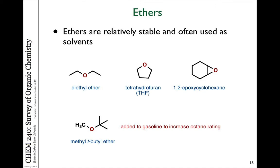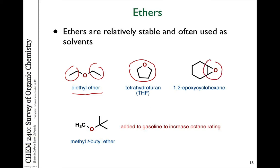Ethers are molecules which have an oxygen attached to two different carbons. Here you can see a quite simple ether, what we refer to as diethyl ether. This is a cyclic version, what we refer to as THF or tetrahydrofuran. Other kinds of cyclic ethers are these three-membered rings which we refer to as epoxides. Epoxides are more reactive than most other ethers, which are generally thought to be stable and inert.